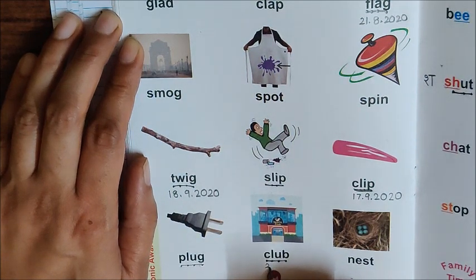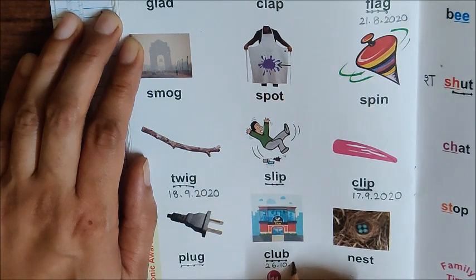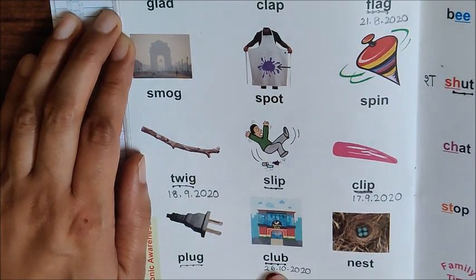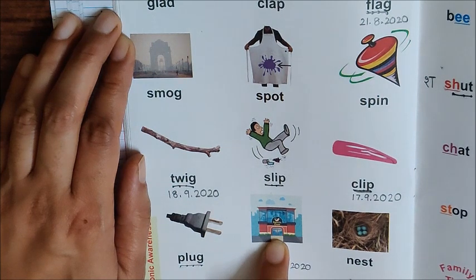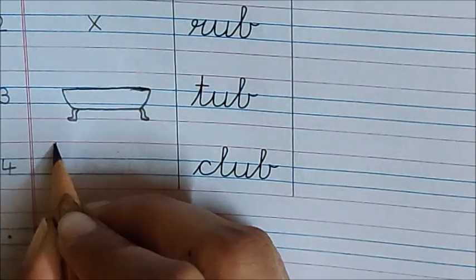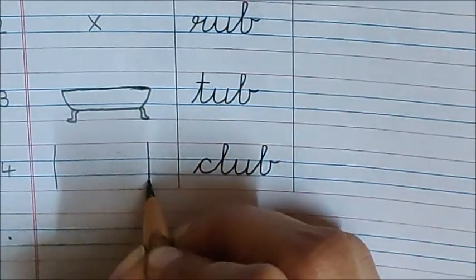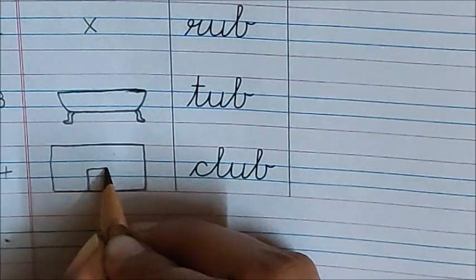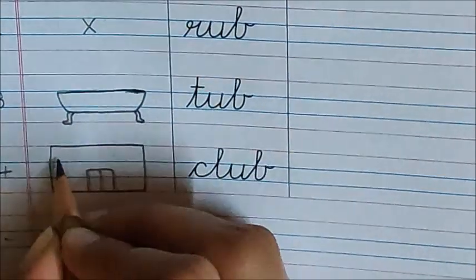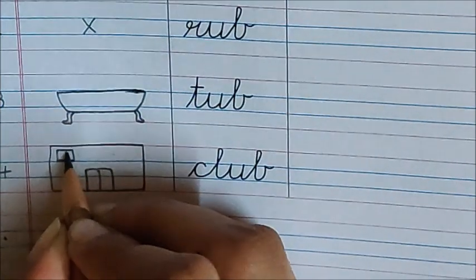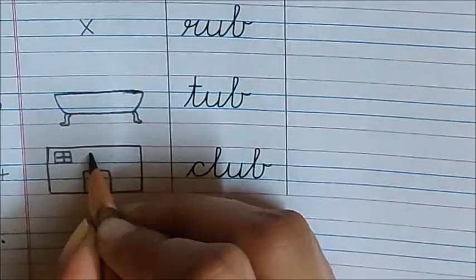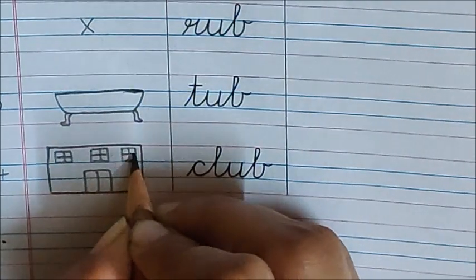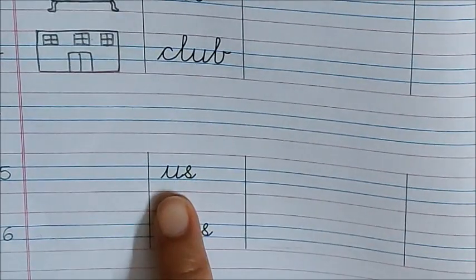26.10.2020. After writing the date, let us draw the picture of club in our orange book. Now let us draw club here children. I am drawing a club. This is the door of the club and here are many windows. I am drawing a club.